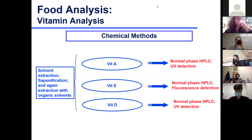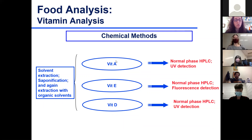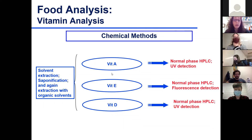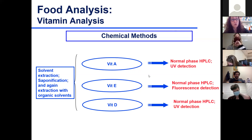Chemical methods based on chromatographic separation are common for fat-soluble vitamins A, E, and D. You start with solvent extraction using reflux, then saponify to remove fatty acids - they become fatty acid salts, soluble in aqueous solution - then extract again with organic solvent to isolate your vitamins. You then use chromatography, typically normal phase, with UV or fluorescence detection depending on the vitamin.